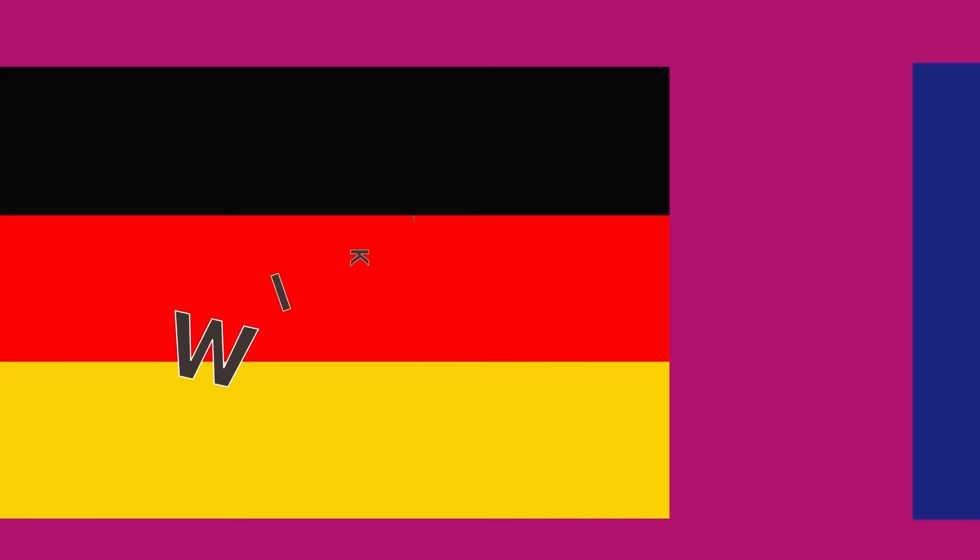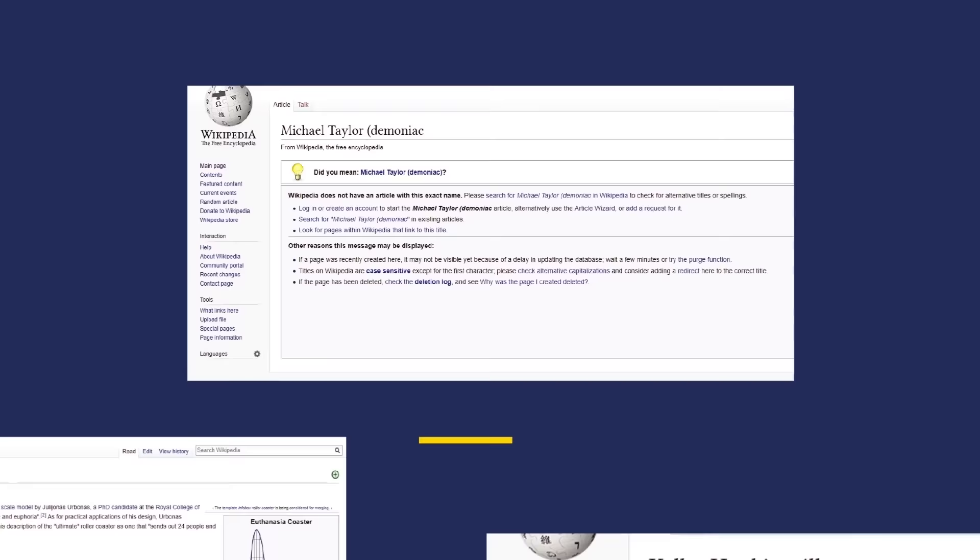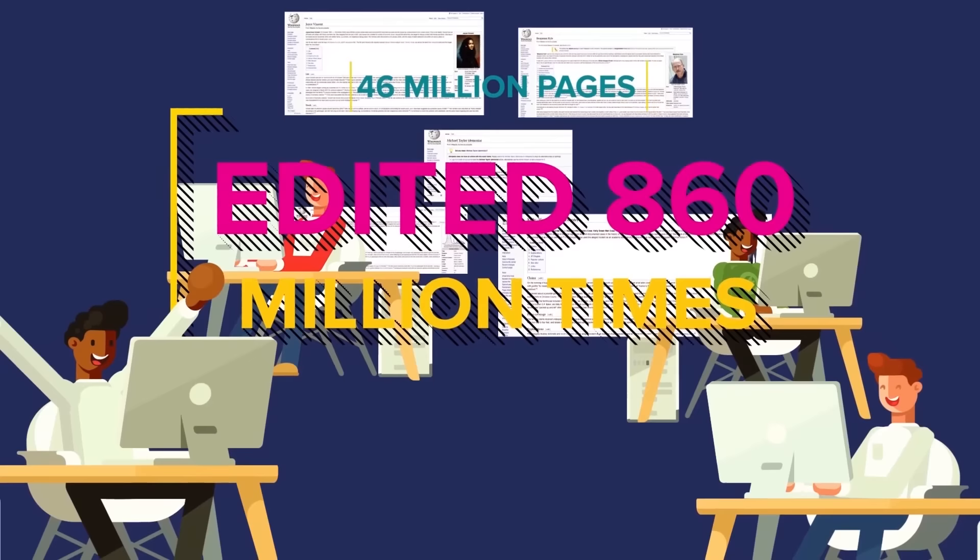You can find 301 languages on Wikipedia, but the English language version is easily the biggest. Right now, in English, you can find 5.7 million articles and 46 million pages, which have been edited 860 million times and looked at by 1,203 admins.